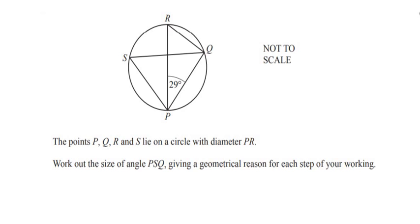The points P, Q, R and S lie on a circle with diameter PR. So PR is a diameter given, which means it is going to divide our circle into two equal halves. Work out the size of angle PSQ, giving a geometrical reason for each step of your working — that means for whichever step we use, we have to give a geometrical reason.